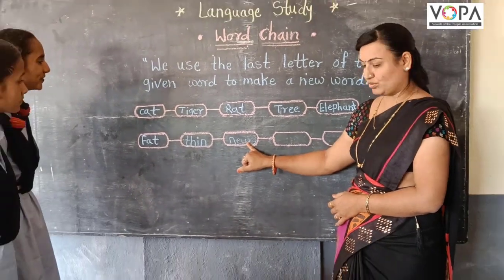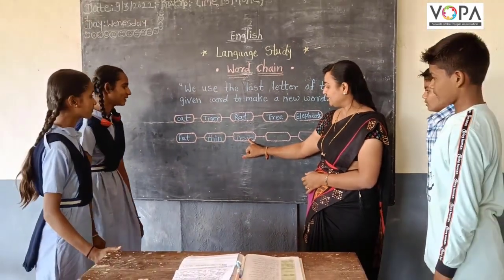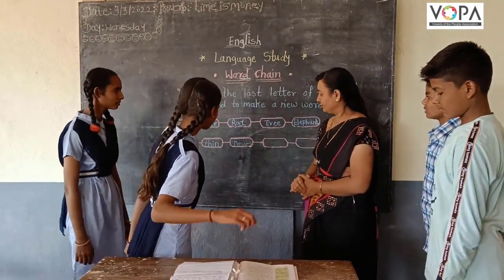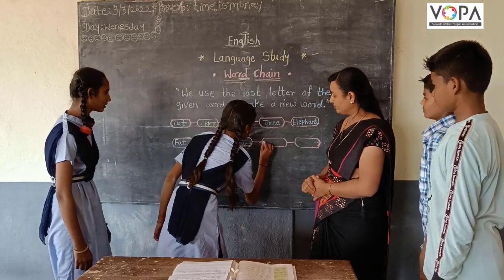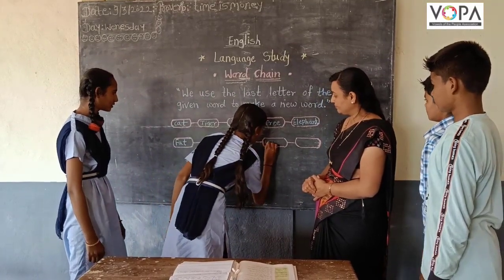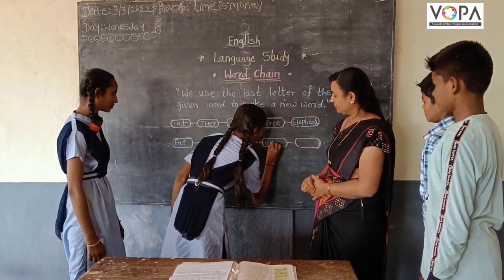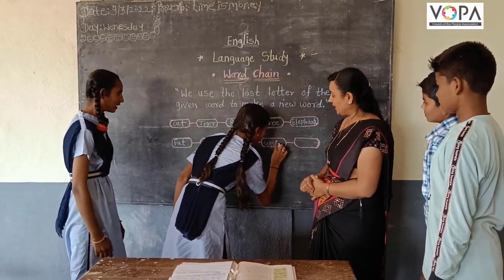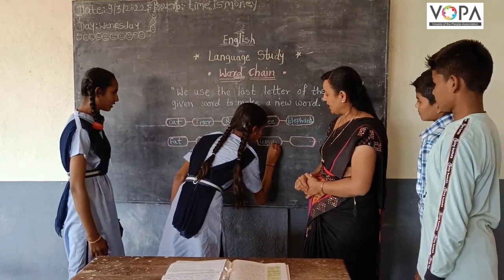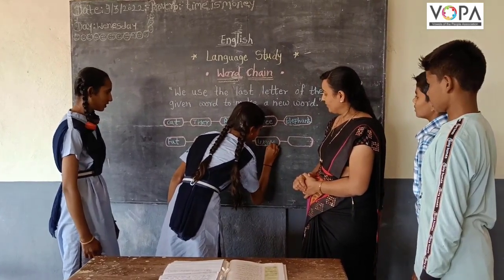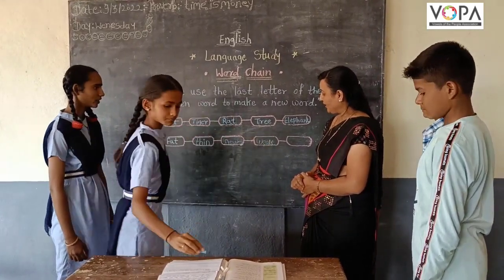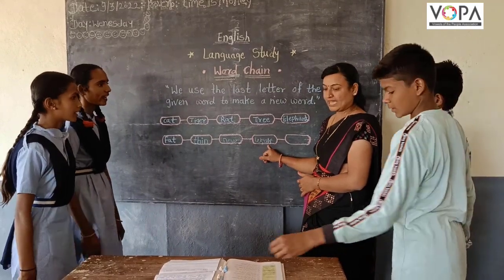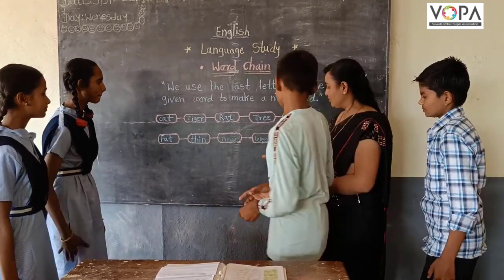New. Very good. New. Which is the last letter? W. Who can write a word starting with W? W, E, A, K — Weak. Which is the last letter? K.